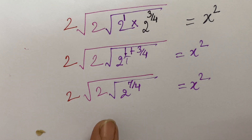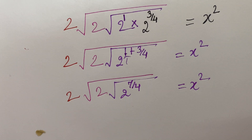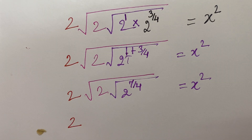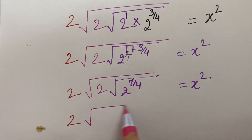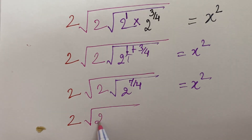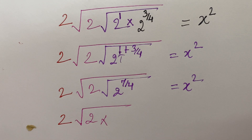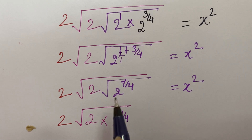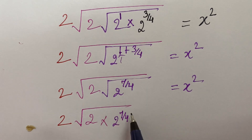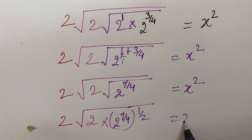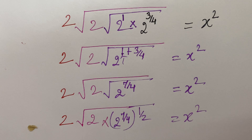Now again we remove the root sign. So if you remove the root sign, it will be 2 into square root of 2 and 2 raised to the power 7 upon 4 as it is. And removing this root sign gives raise to the power 1 by 2, equal to x square.